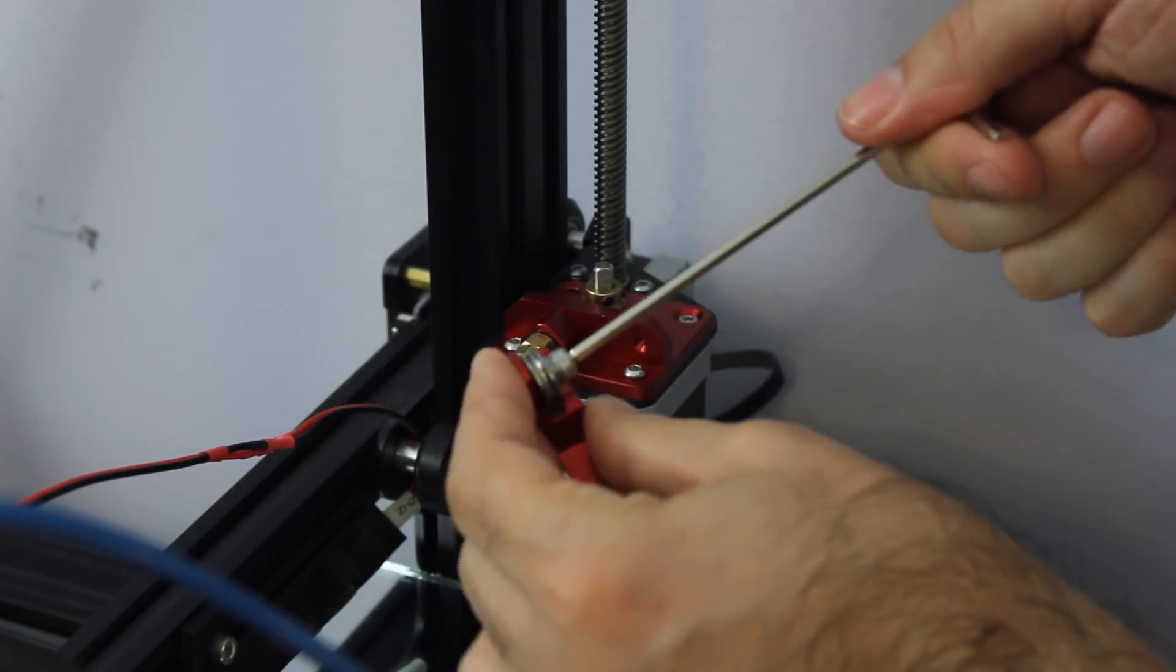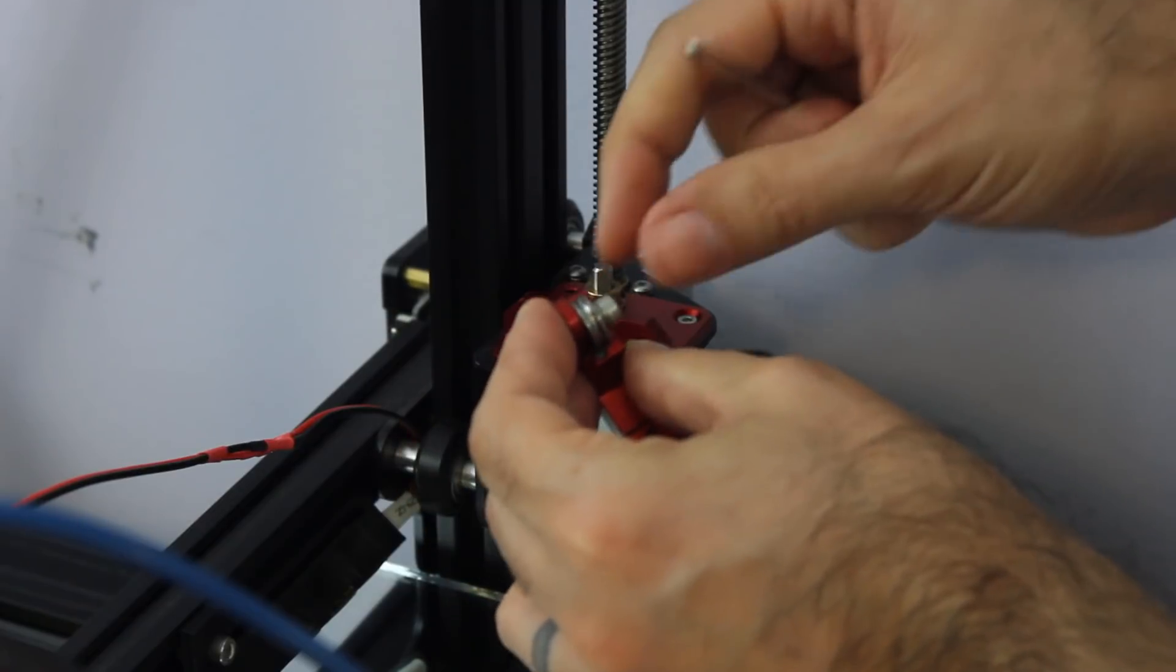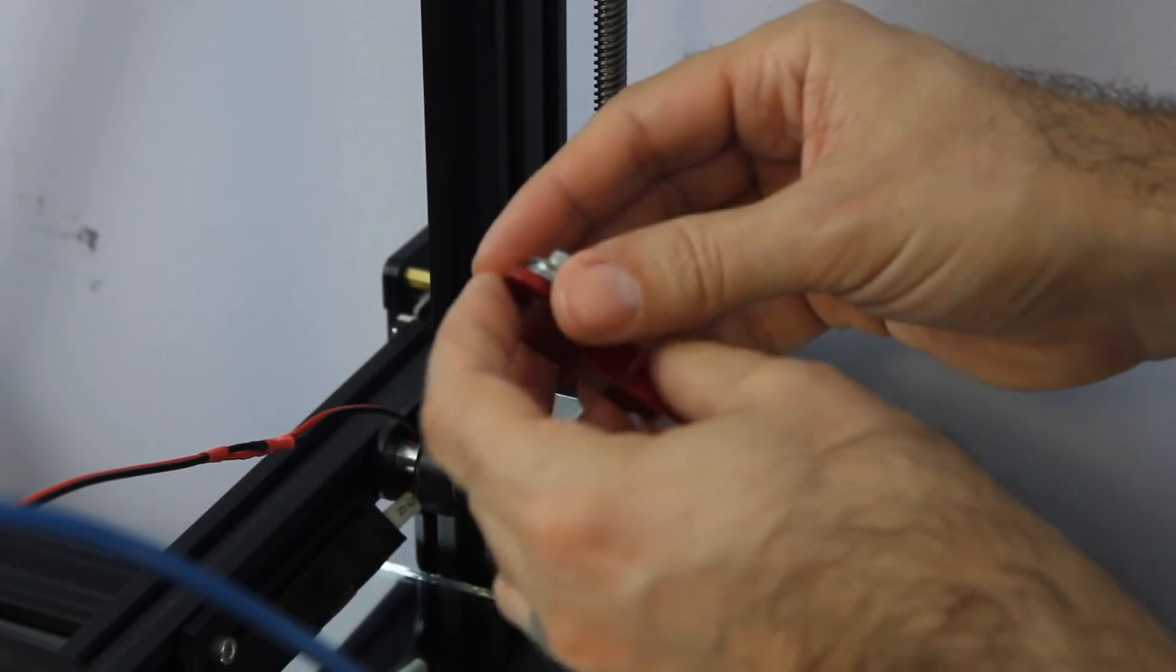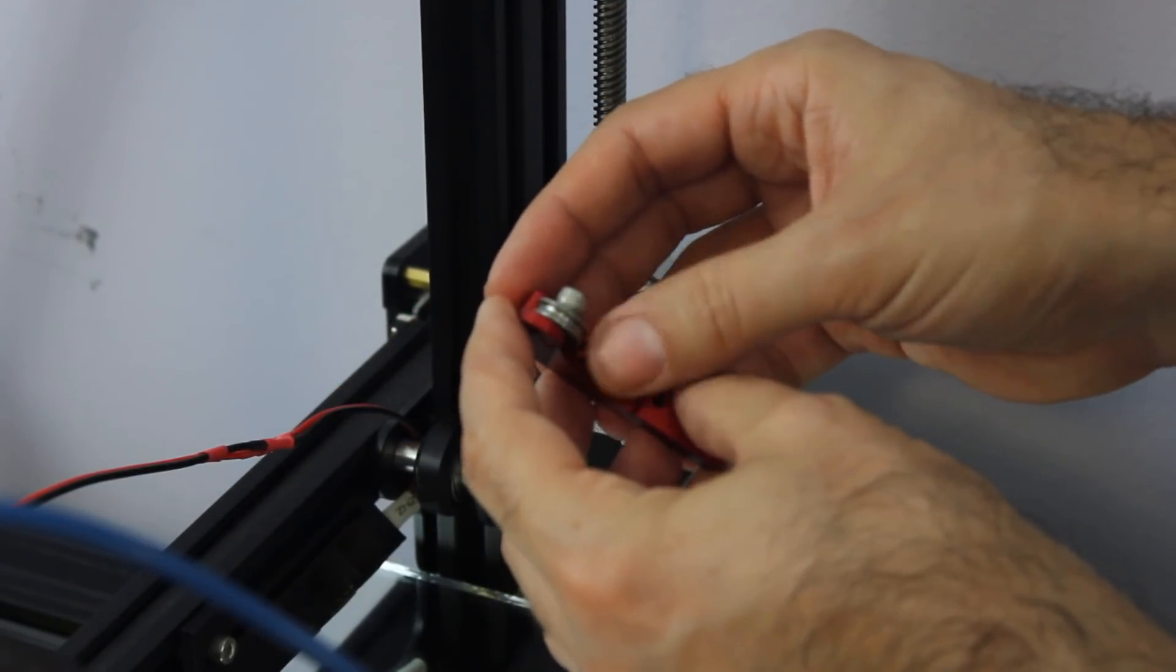And you want to make sure you don't have to tighten this real tight. The lock washer is going to help hold it in place. You want to make sure that once it's tight that this still spins freely.